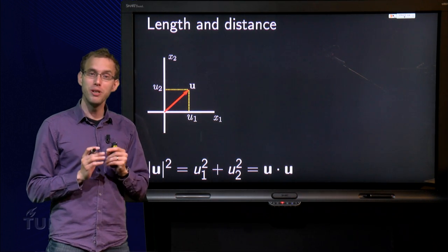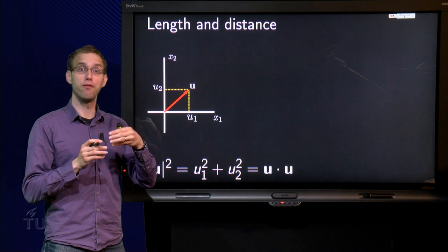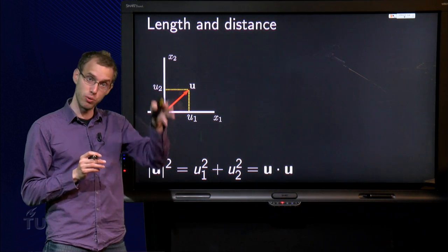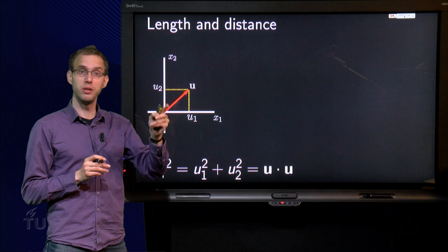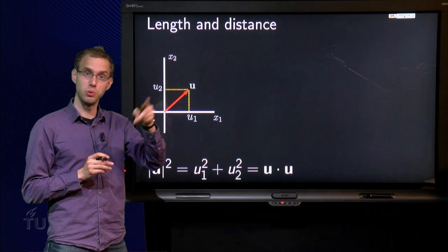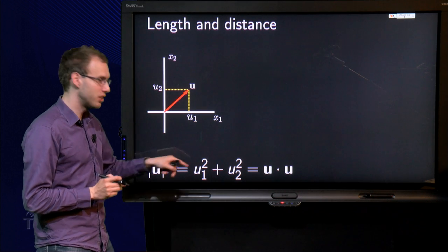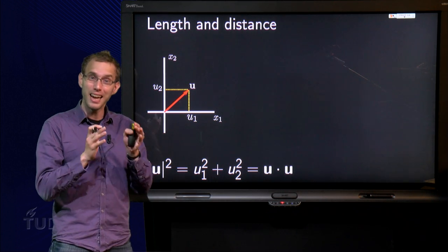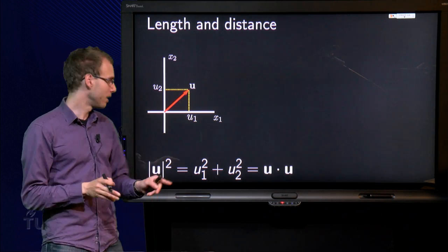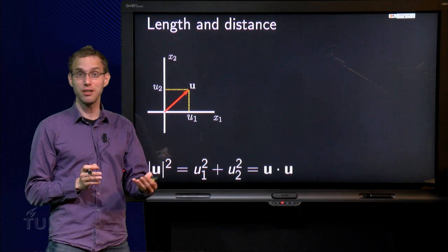But if you compute the inner product of u with itself, so u equals (u1, u2), then u·u equals u1 times u1 plus u2 times u2, so u1 squared plus u2 squared, which is the same. So we see that the inner product of u with itself yields exactly the length squared of u.